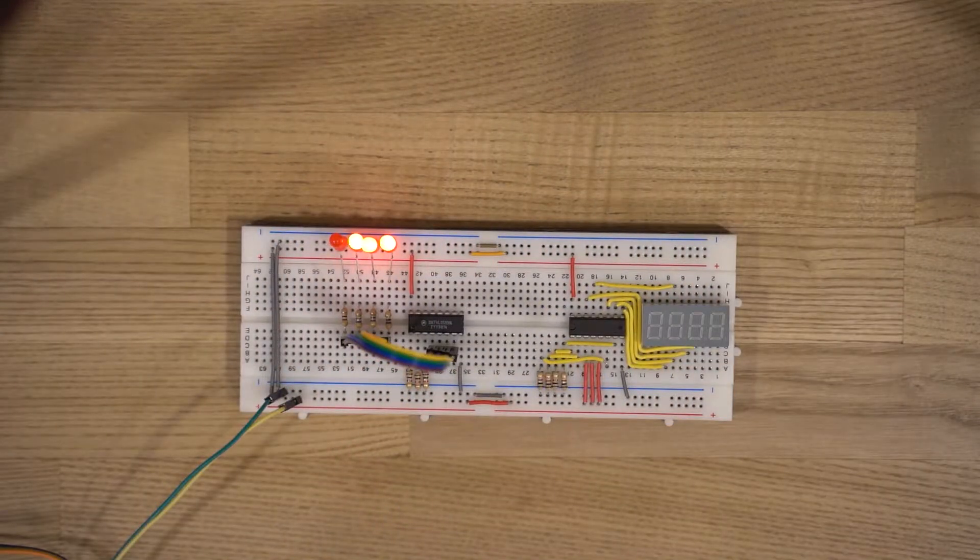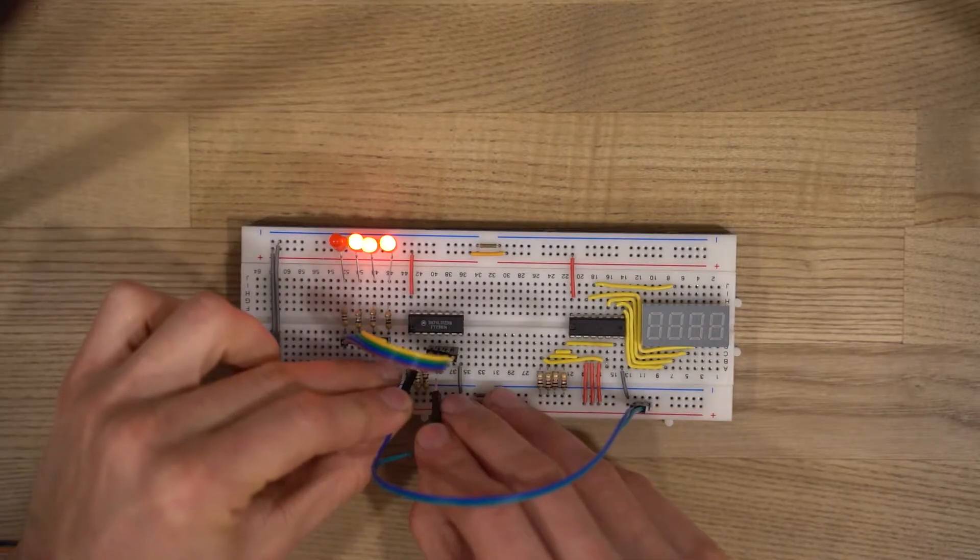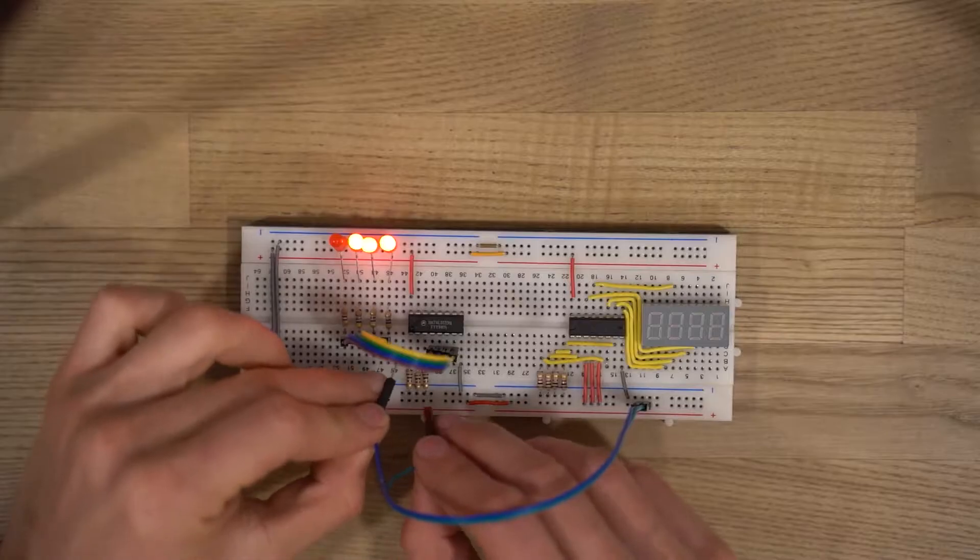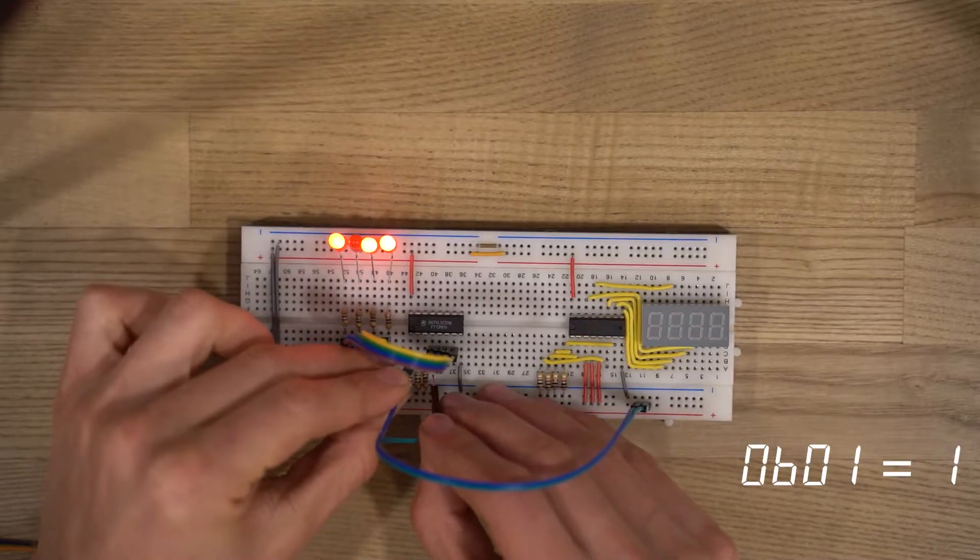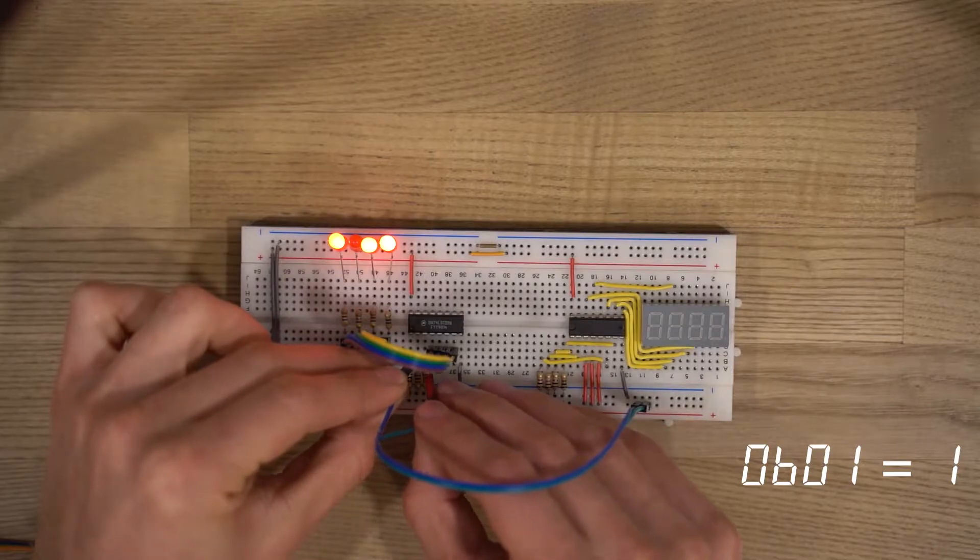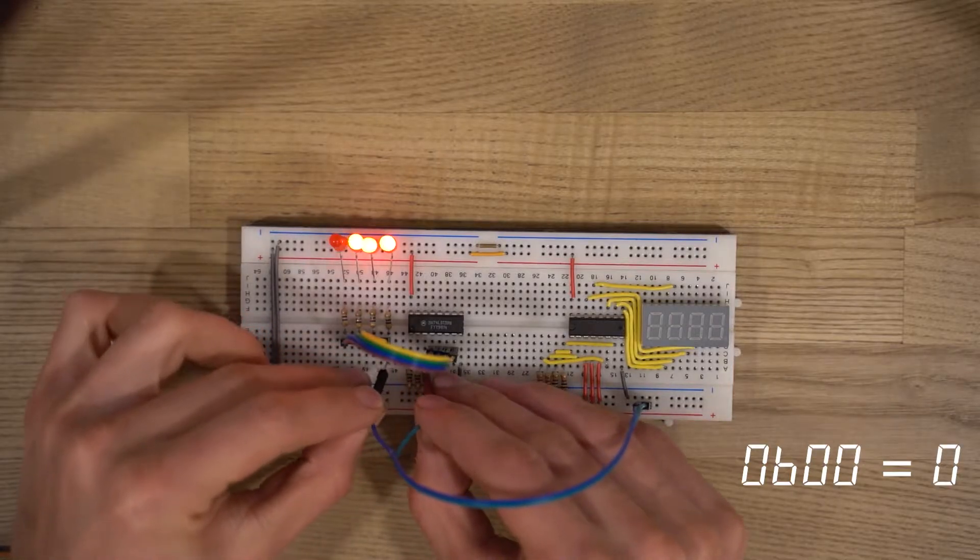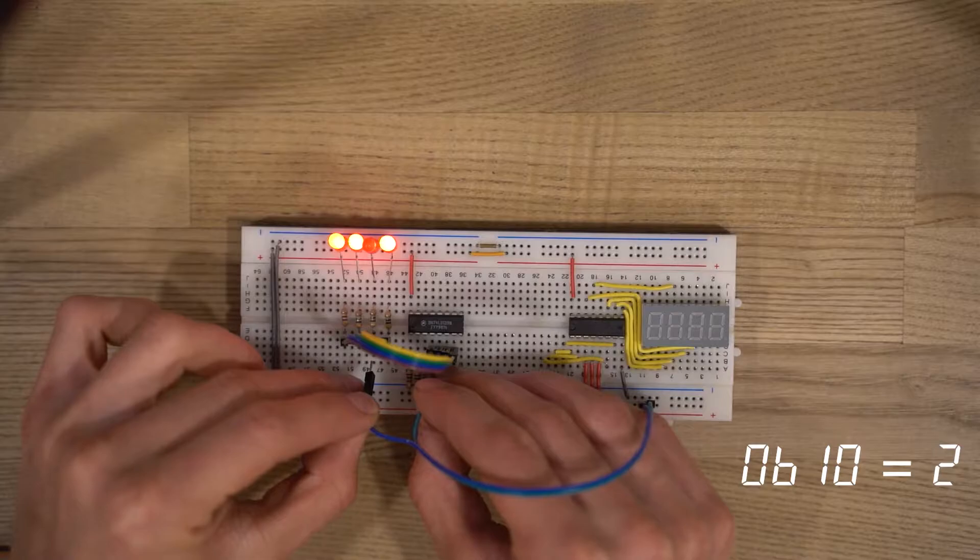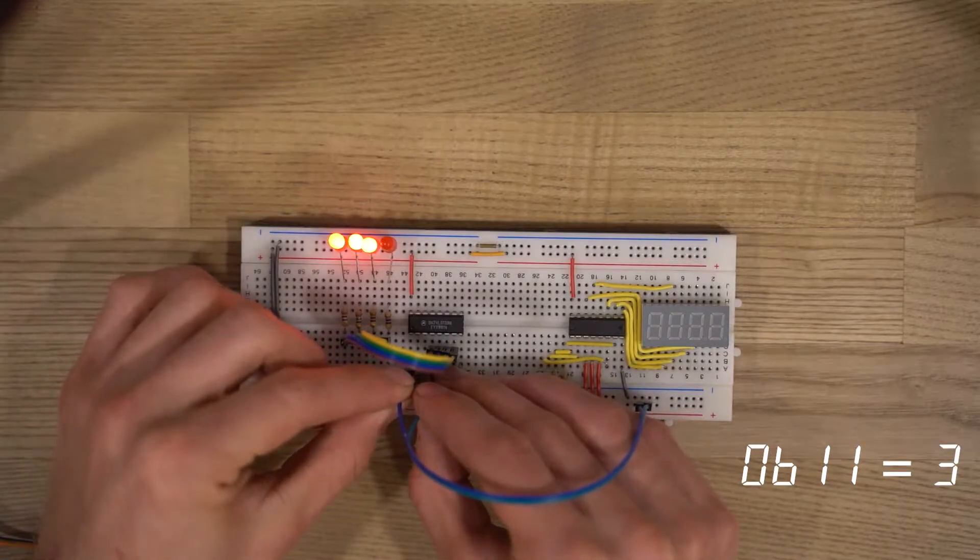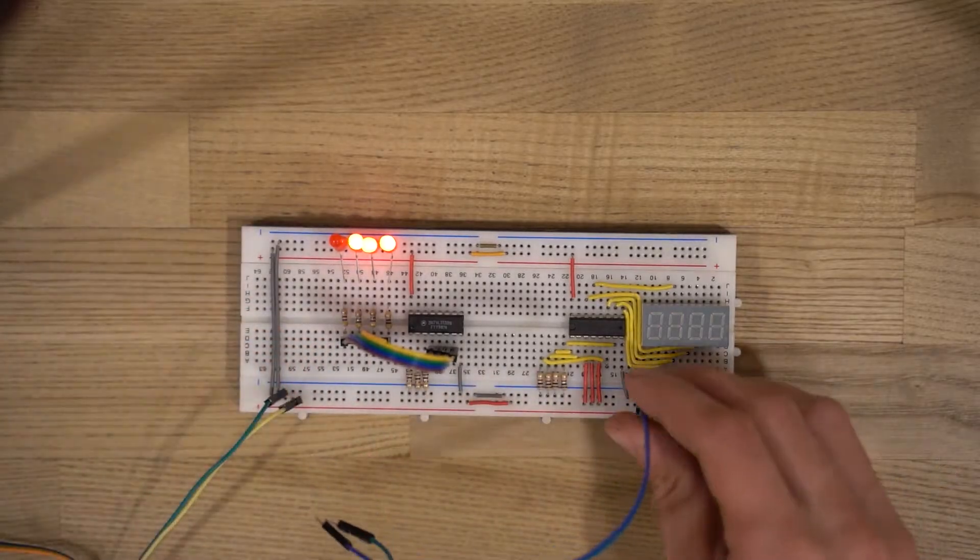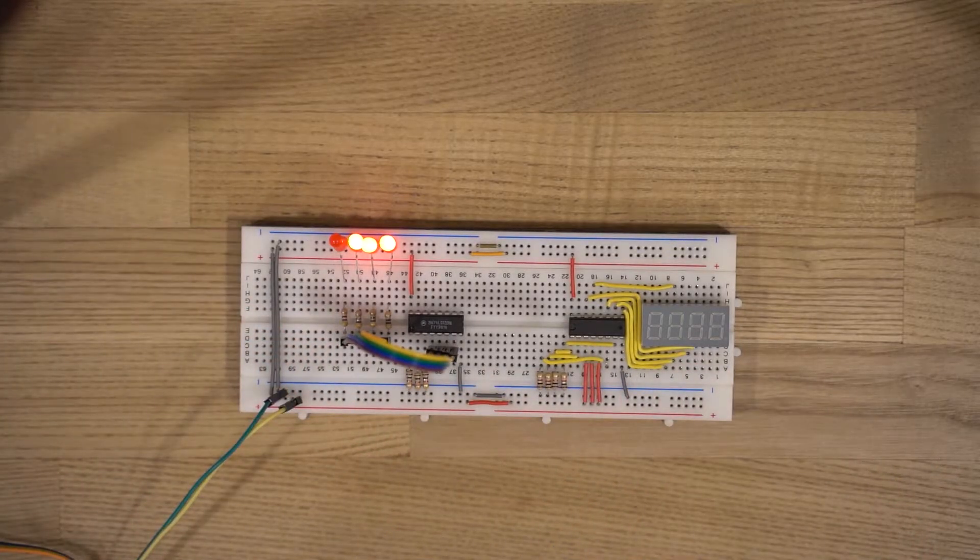So as you can see something is happening but not exactly what we wanted, right? Actually, our chip is pulling all outputs high except 1. Look, I'll give it value 1 and here it is. The second LED is off, now 2, the third LED is off, and the fourth LED is off. So actually everything is working pretty well but quite an opposite way.